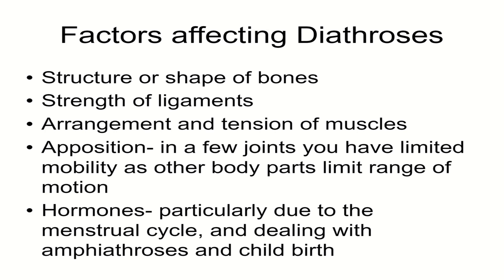Apposition refers to the fact that certain joints have a limited range of motion because anatomical structures physically prevent it. For example, the shoulder is a ball and socket joint with a huge range of motion, and the hip is also a ball and socket joint — but while you can pinwheel your arm, you can't pinwheel your leg. That is apposition: the greater trochanter of the femur prevents you from pinwheeling your femur.